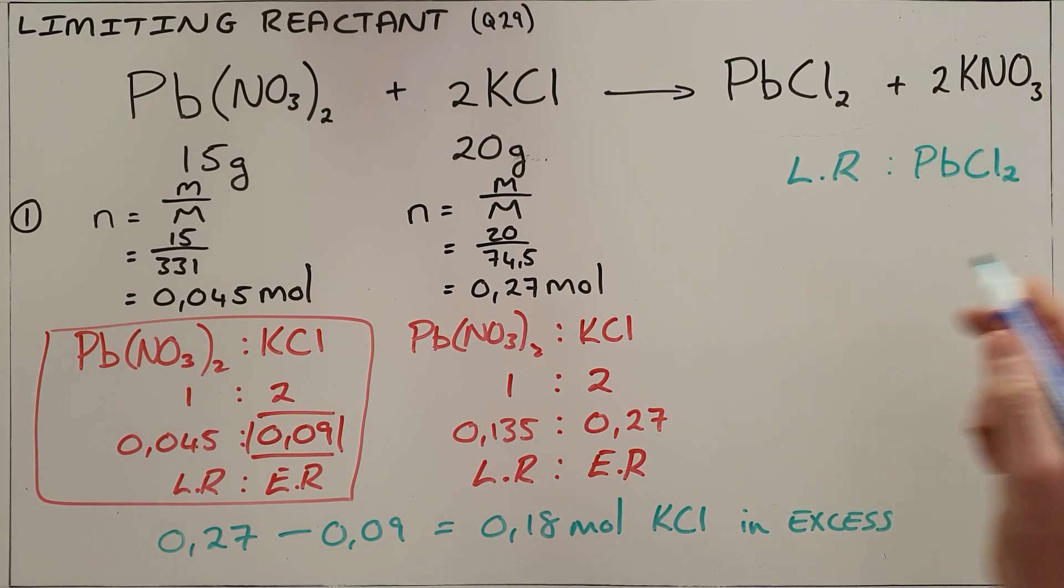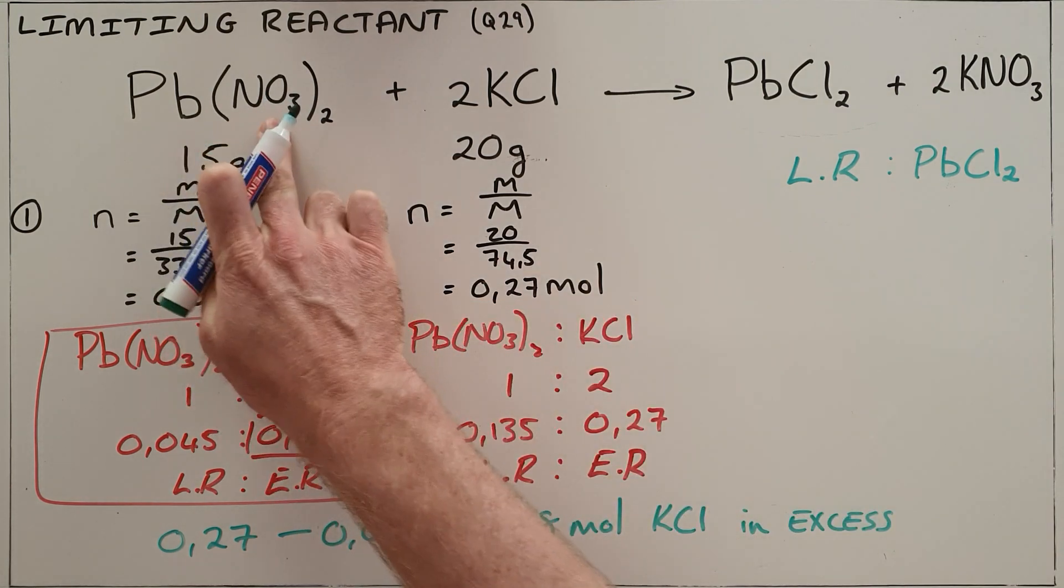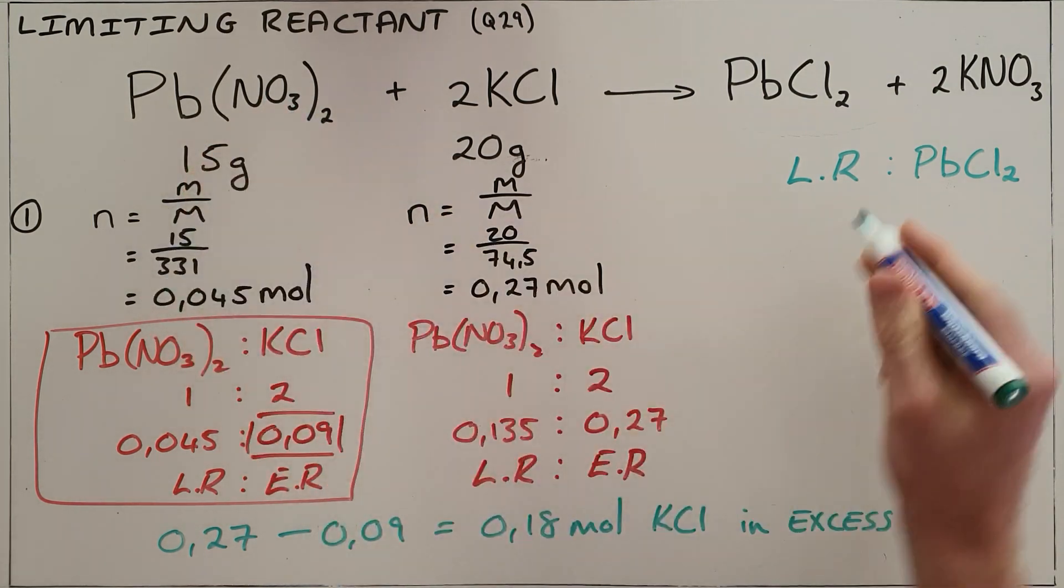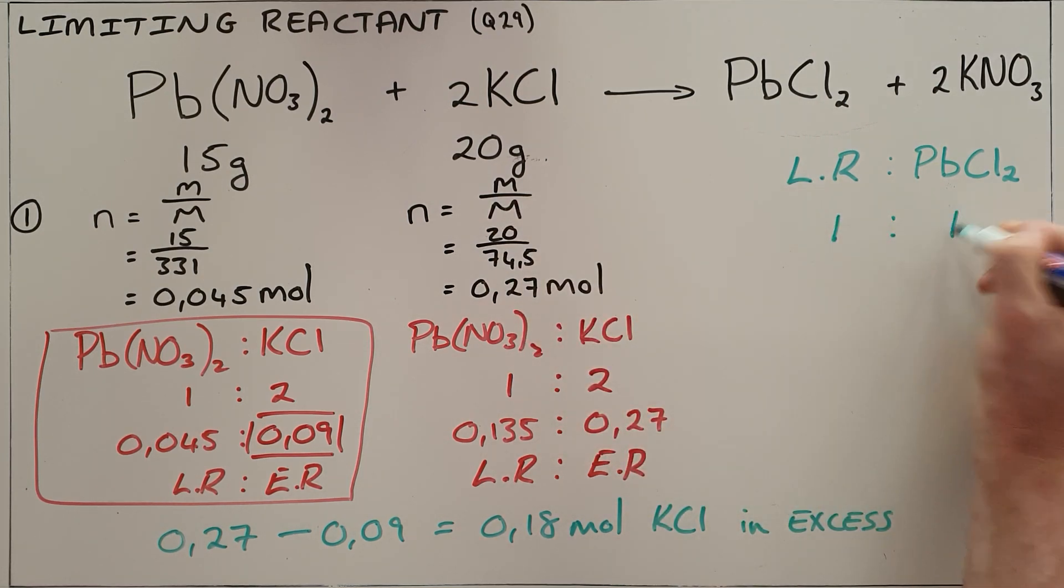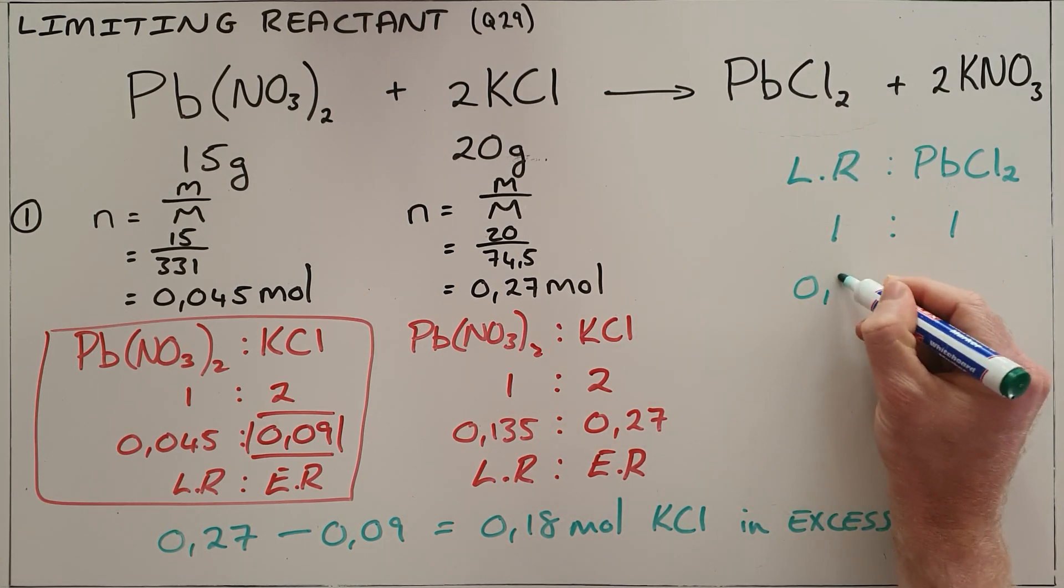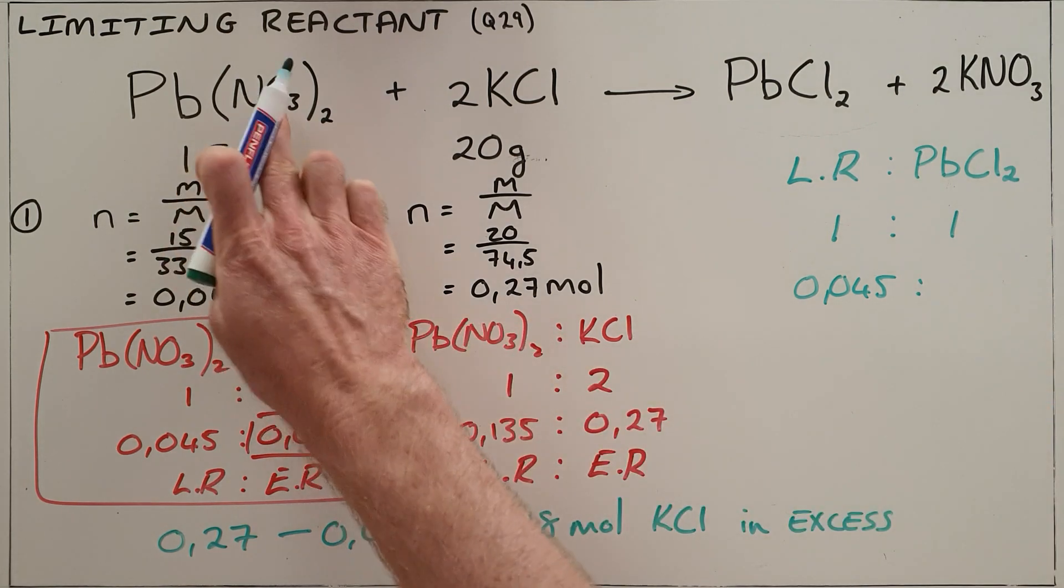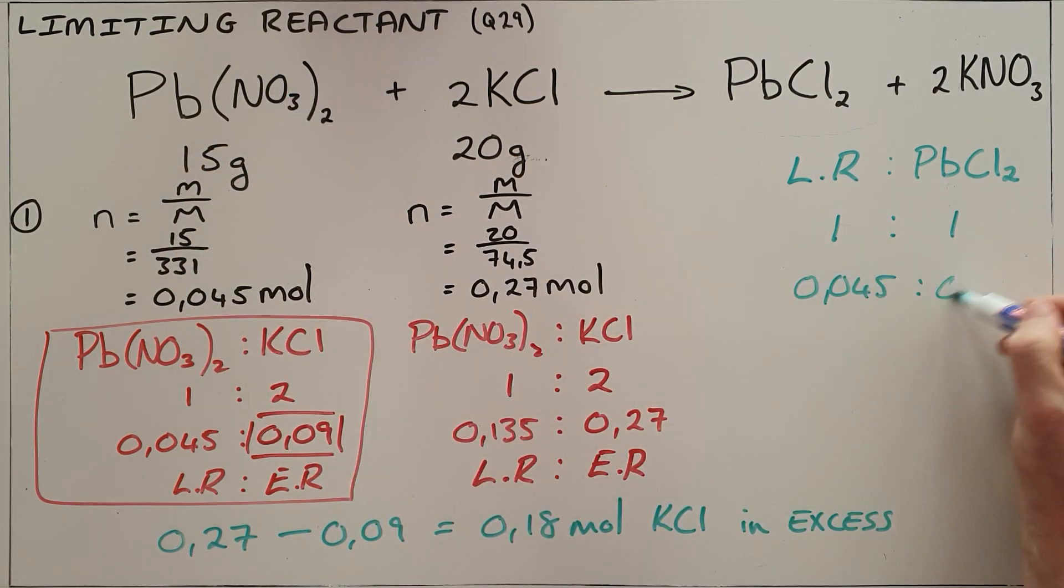You would say your ratio of limiting reactant to lead chloride - in this case we said the limiting reactant was lead nitrate - so that is a ratio of one to one. When asked what quantity of lead chloride would be formed, we know that we used up 0.045 moles of our limiting reactant, which would mean that we would have formed 0.045 moles of lead chloride.